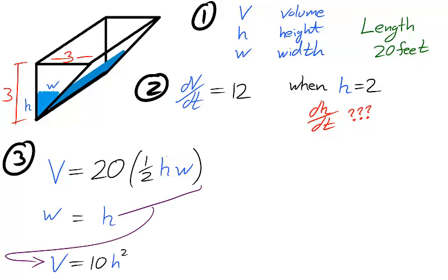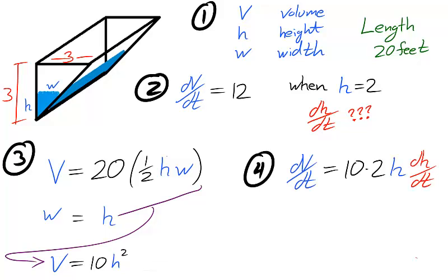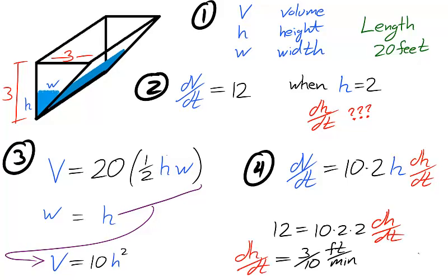We combine the two equations to find a main equation, V is equal to 10h squared. We differentiate the equation with respect to t, and we have all the information that we need. dV/dt is 12, and h is 2. And we find that the rate of change for the height of the water is 3/10 feet per minute.